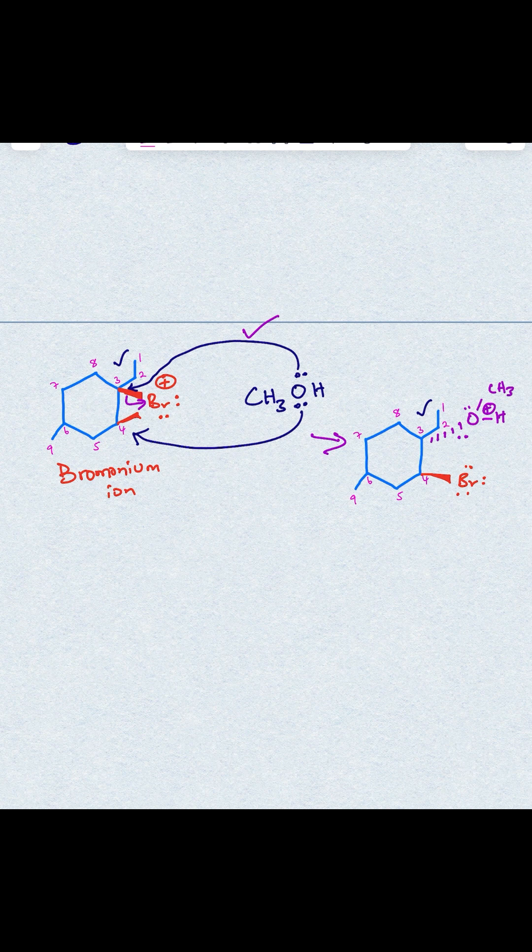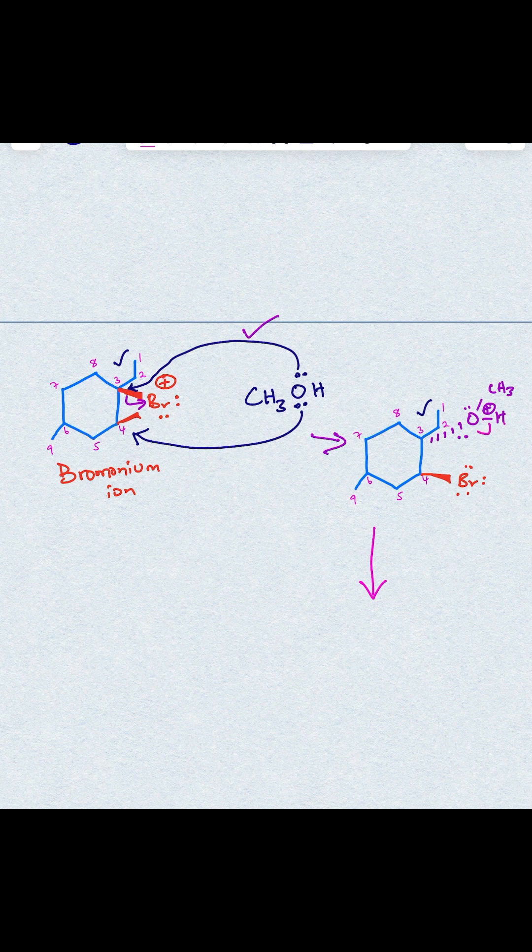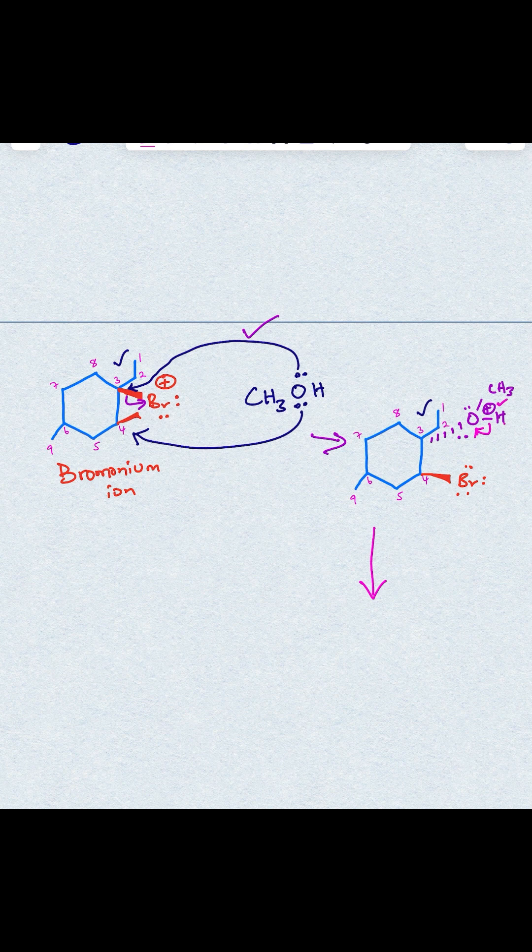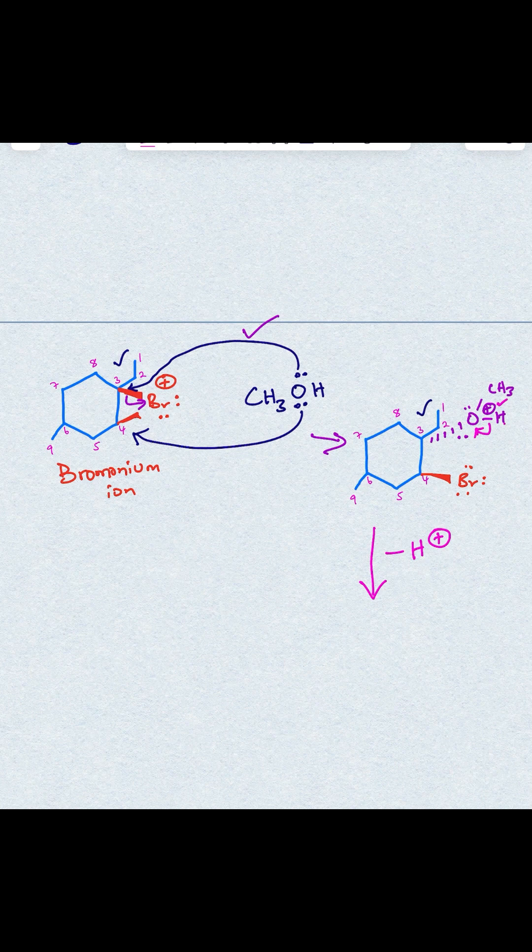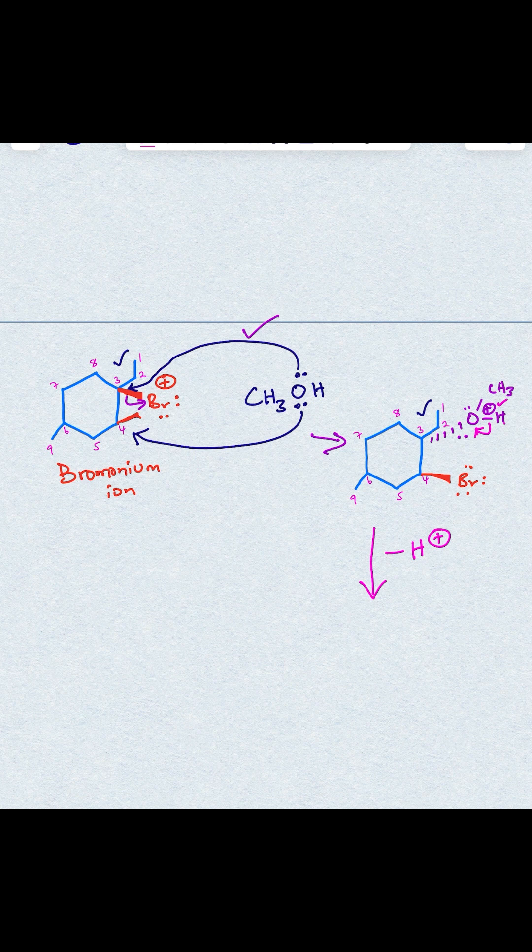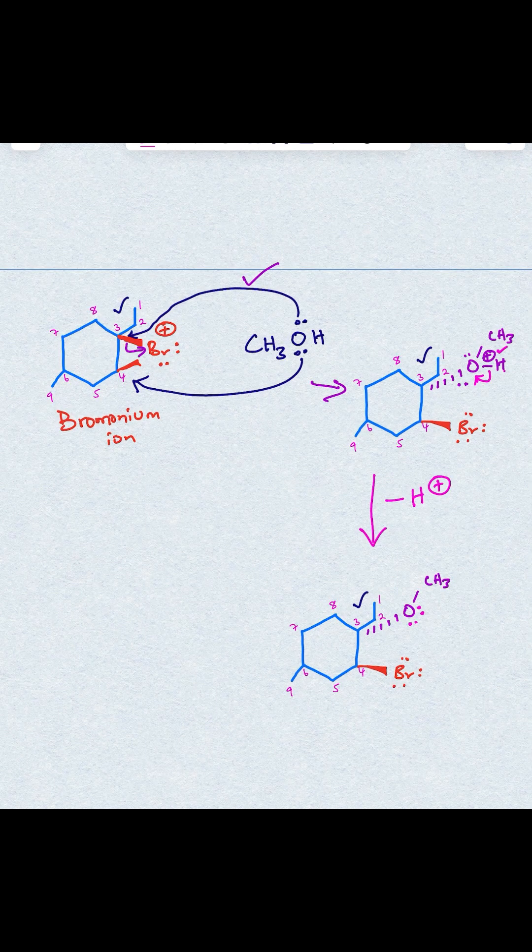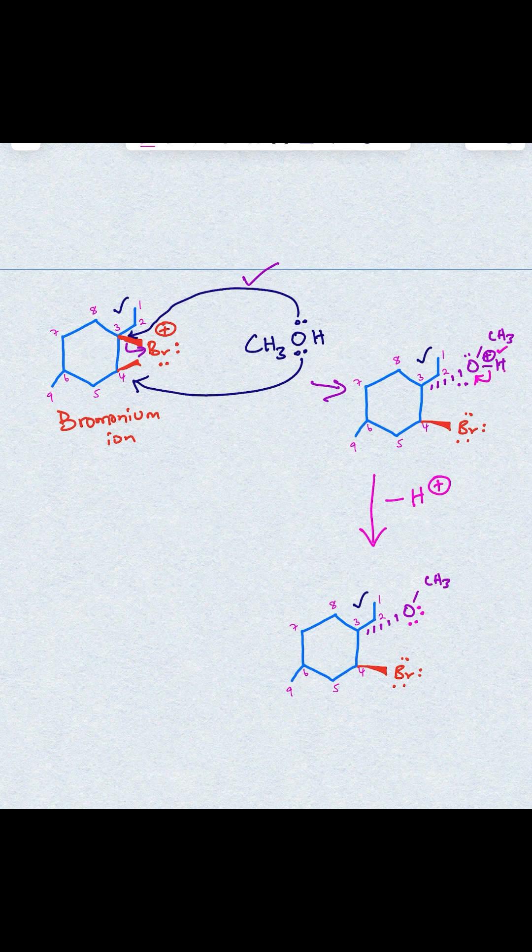And then the last step in the mechanism is you're going to lose that hydrogen, so you're going to lose it as a proton, and its electrons will flow back to oxygen to neutralize that positive charge, and therefore you say minus H+. That's because you have solvent in the reaction mixture, or you have some additional methanol that can deprotonate that intermediate, and therefore you end up with this product. And now oxygen has two electron pairs.